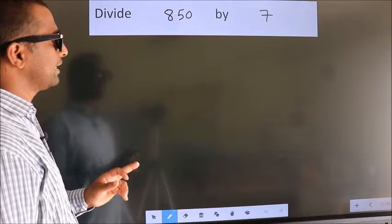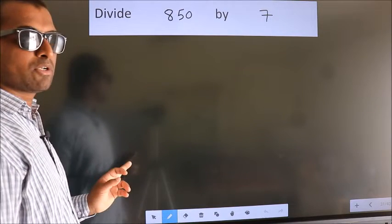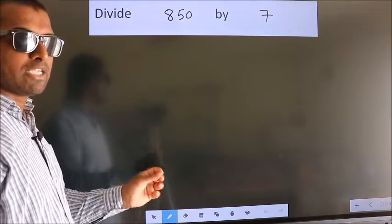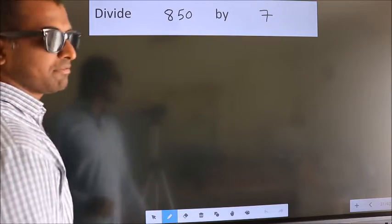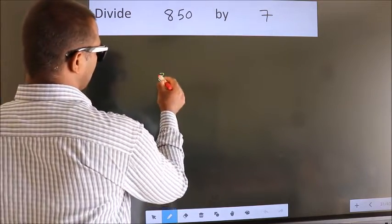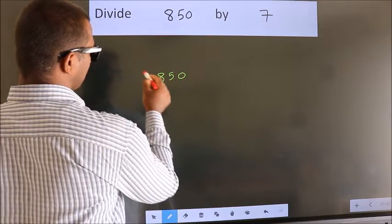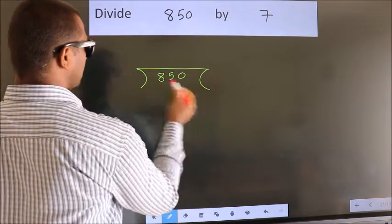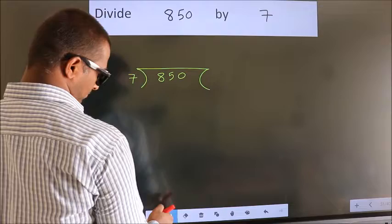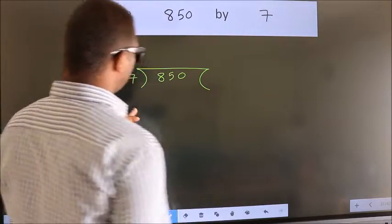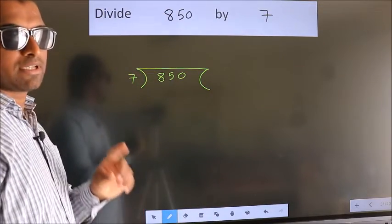Divide 850 by 7. To do this division, we should frame it in this way. 850 here, 7 here. This is your step 1.